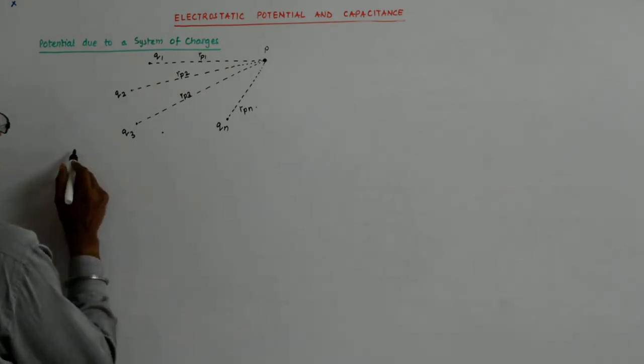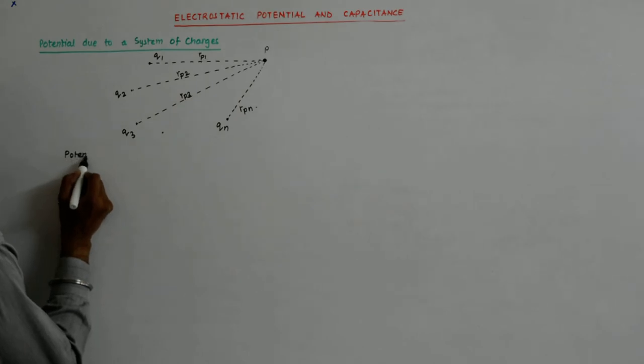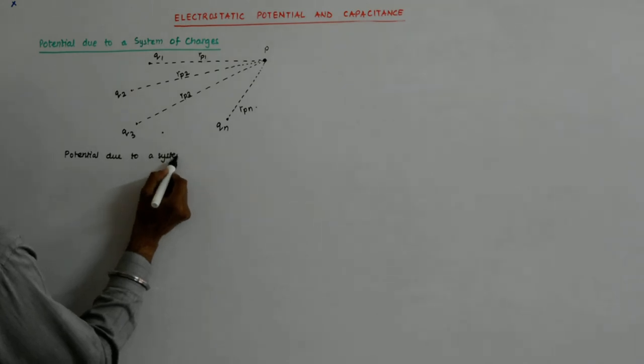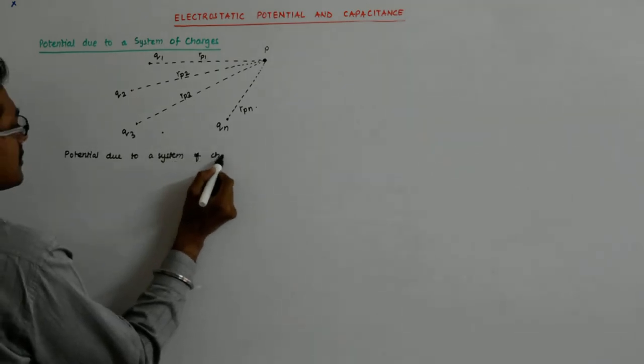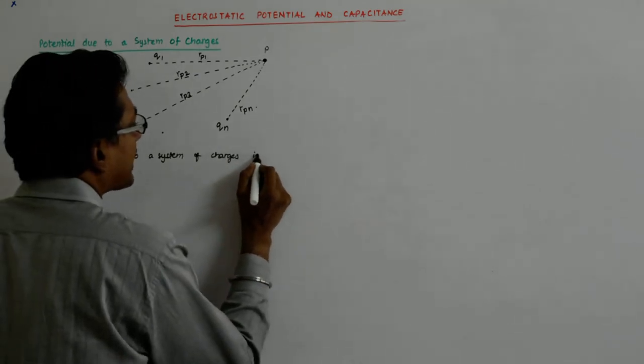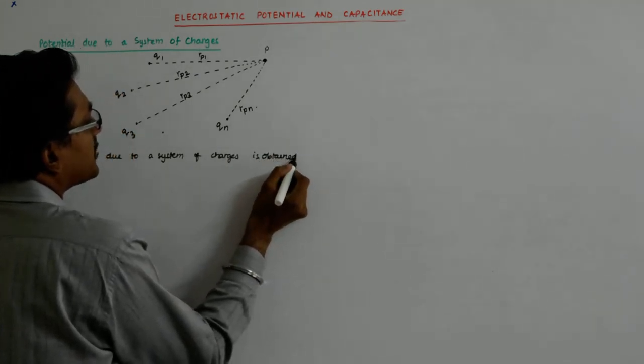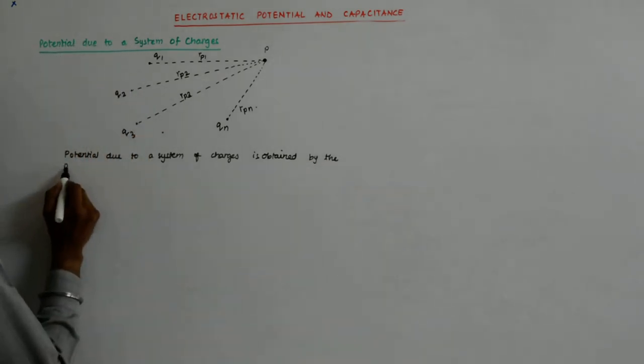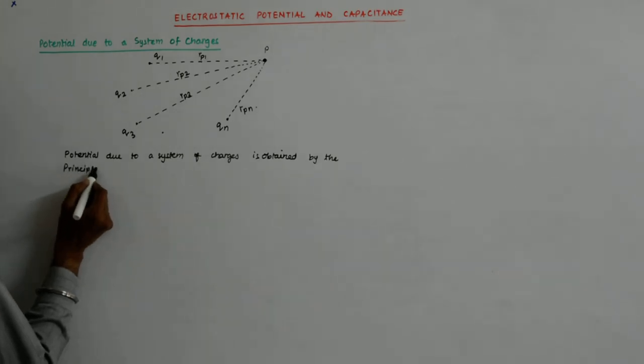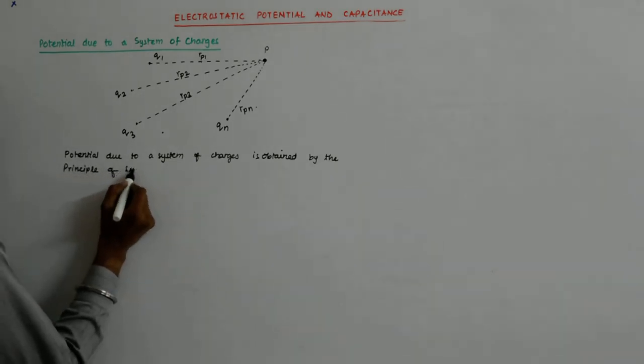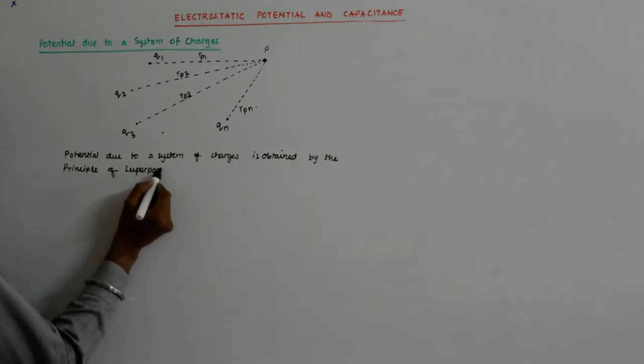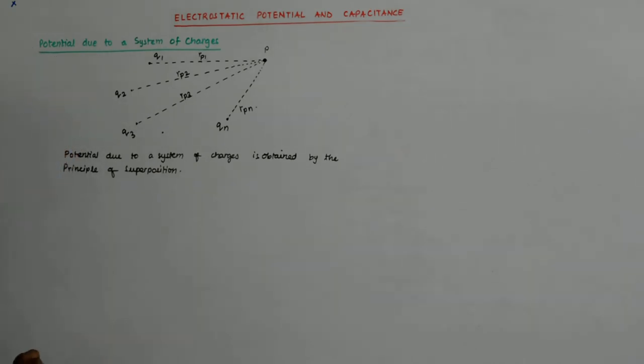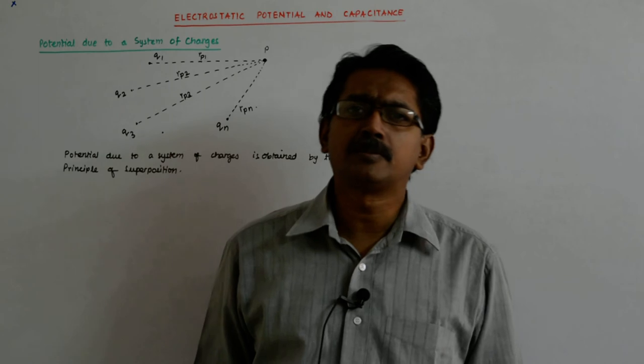So what is the potential? The potential due to a system of charges is obtained by the principle of superposition. What does it say? What is the principle of superposition?